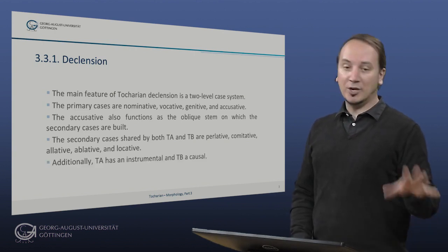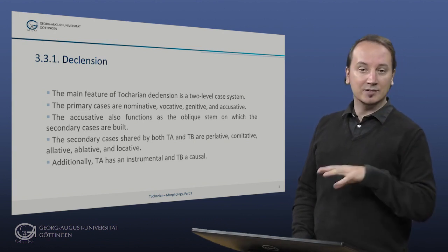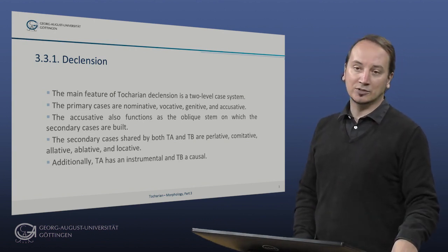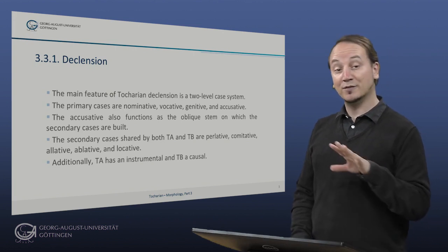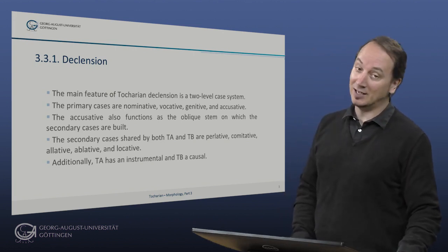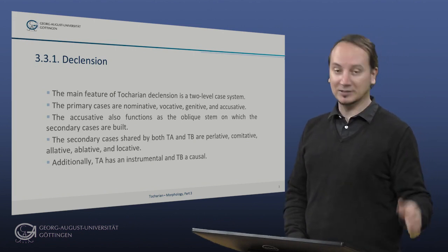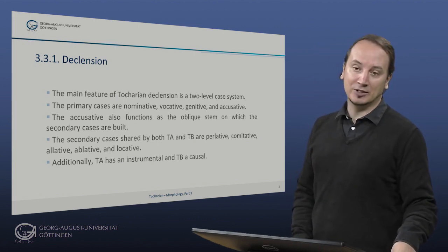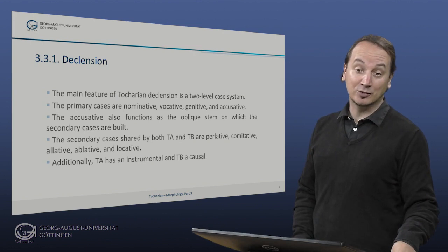Additionally, Tocharian A, and only Tocharian A, has an instrumental, and Tocharian B a so-called causal. For the functions of these cases I refer you to my colleague Gerd Carling, who will teach you about that in her session on morphosyntax of Tocharian.